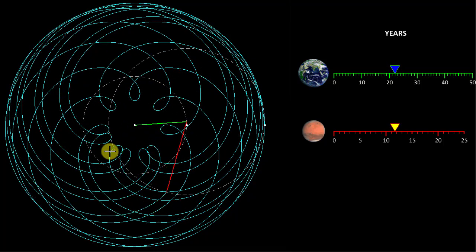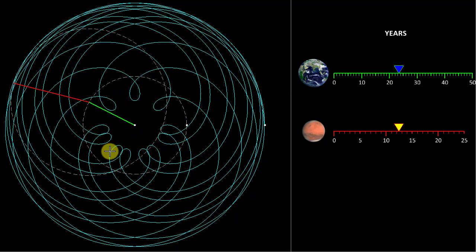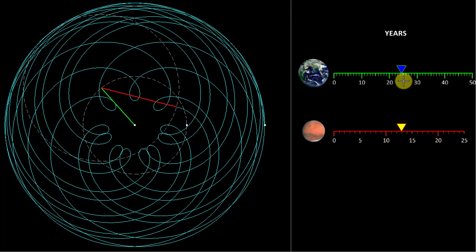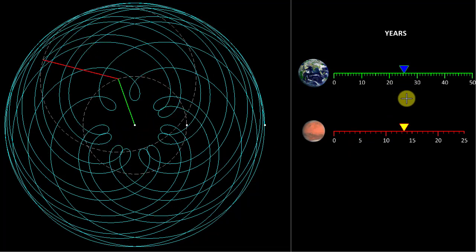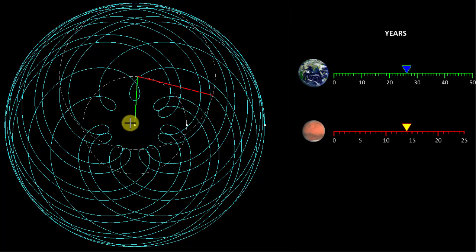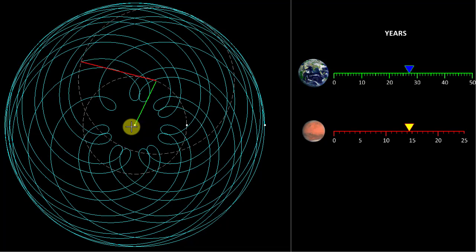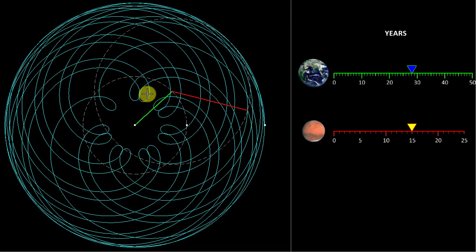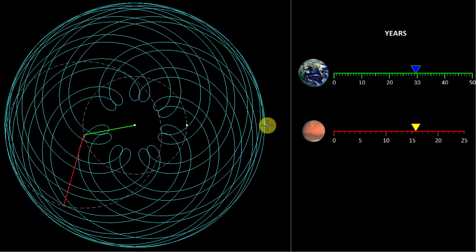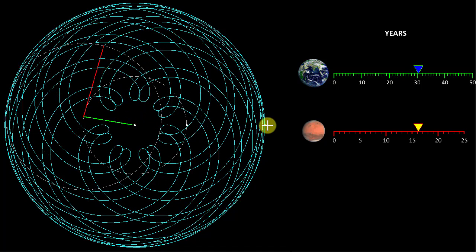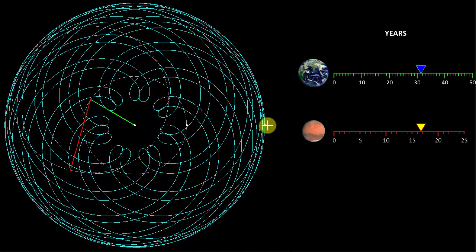So, we are getting more loops here. Let it continue. Now, we are close to 25 earth years and we are now nowhere close to completion. When it completes, we will be getting a symmetrical figure and the path will really close that time. So, keep going.